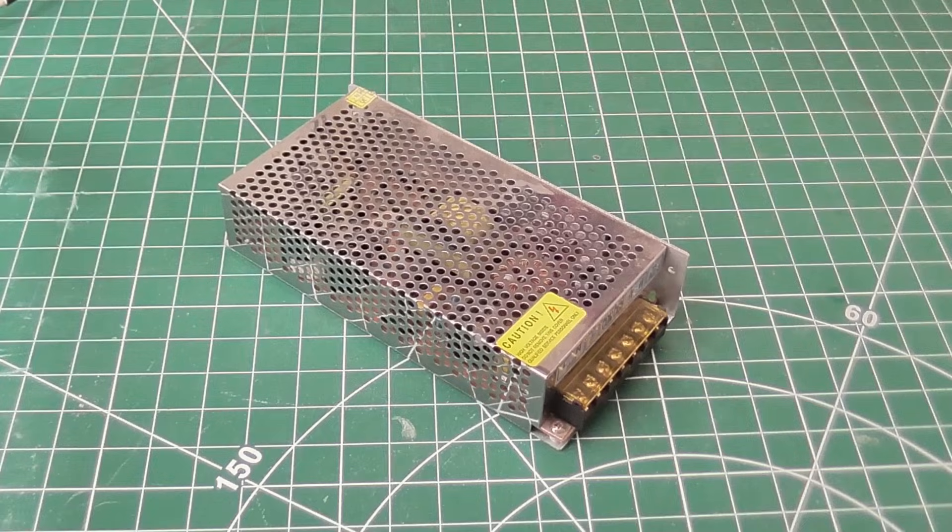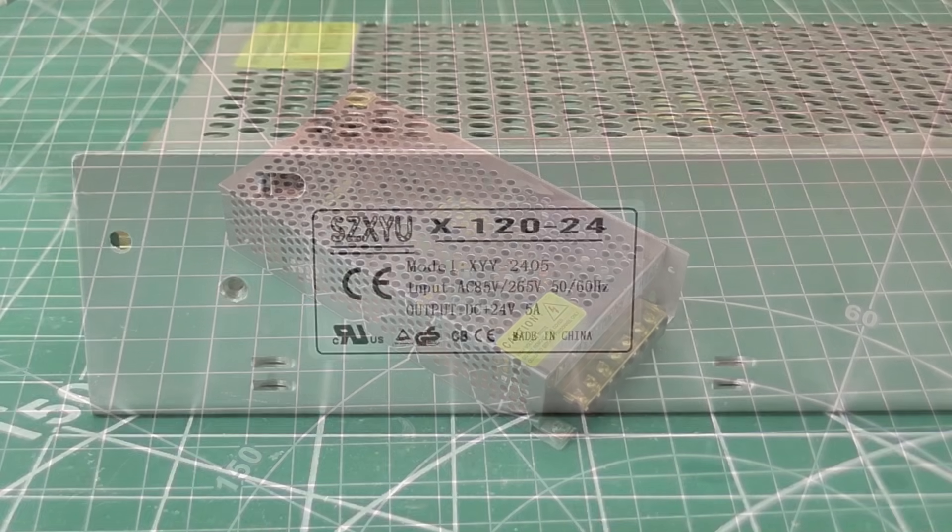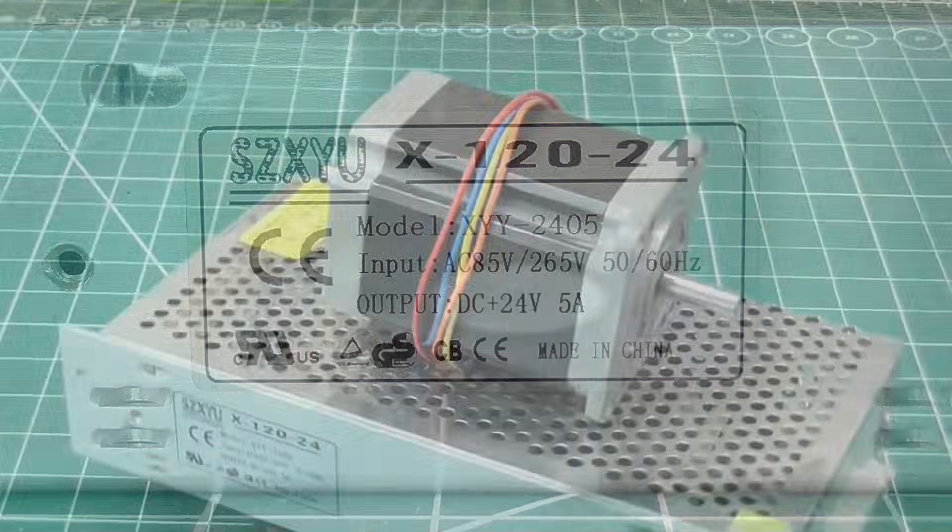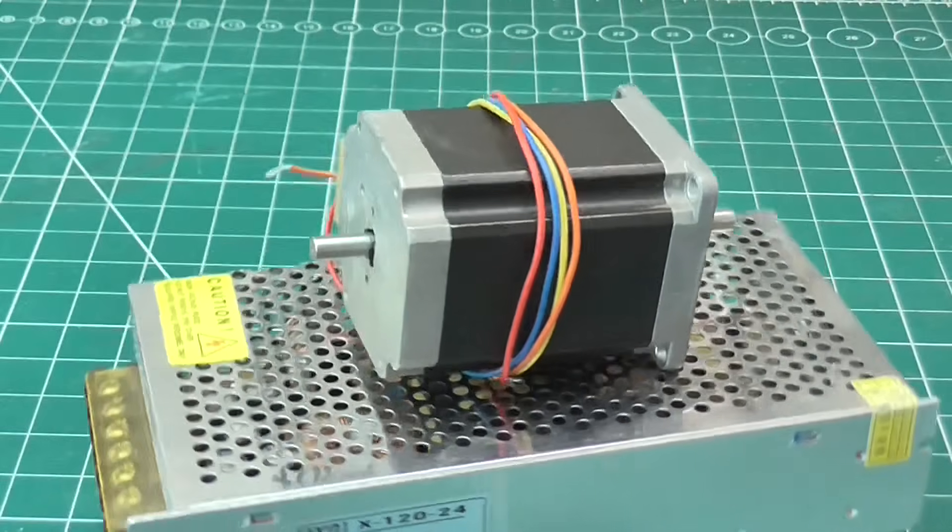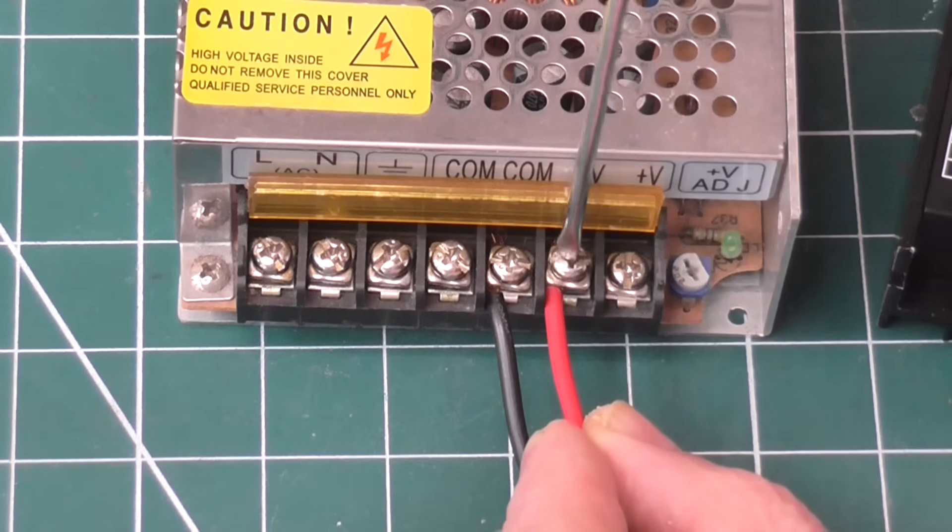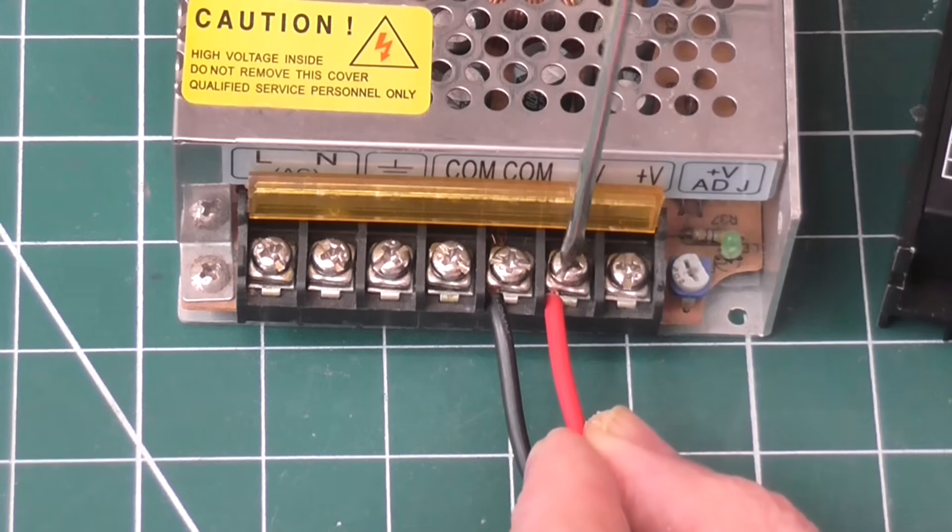Let's approach this a different way. I have this 24 volt power supply that's rated at 5 amps. Surely that should power one 2.8 amp motor. I'm going to connect the driver and motor to this, and measure how much current it actually draws under different conditions.